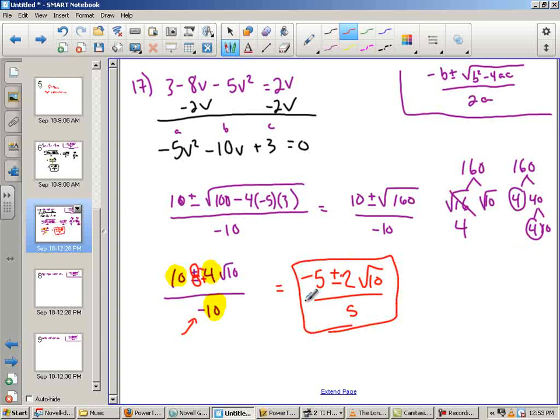You might notice in 17 in the back of the book they have a negative out here. But that's because the plus and minus, it's not going to change anything there.